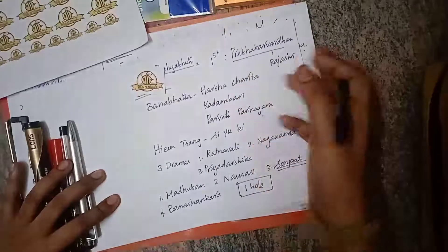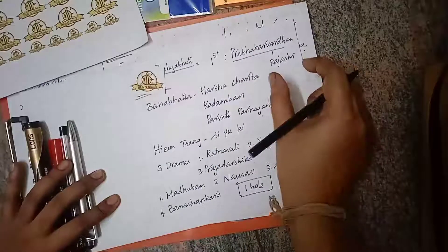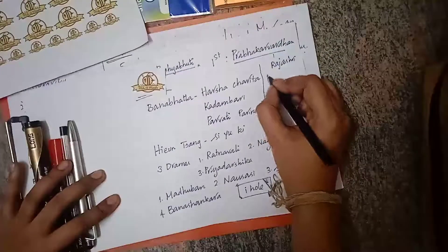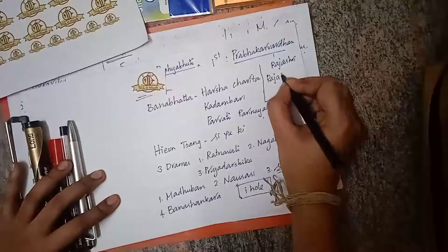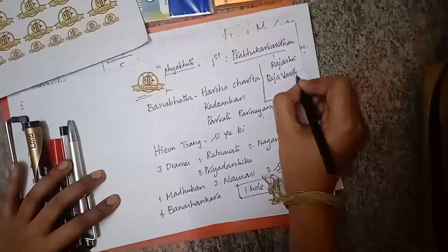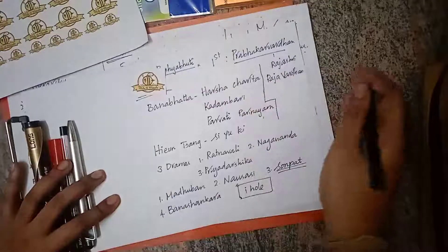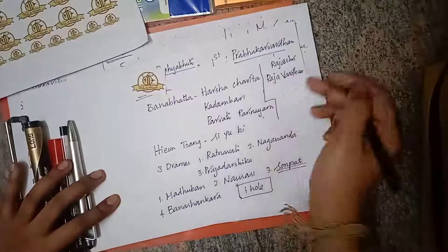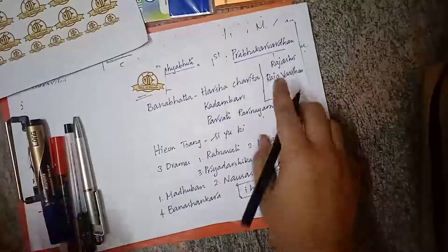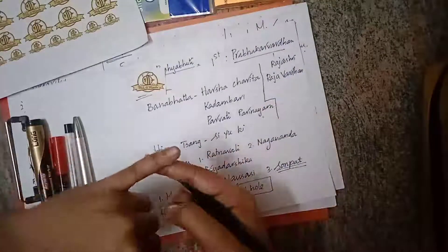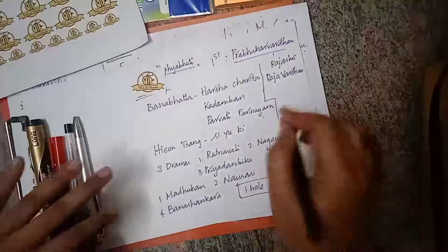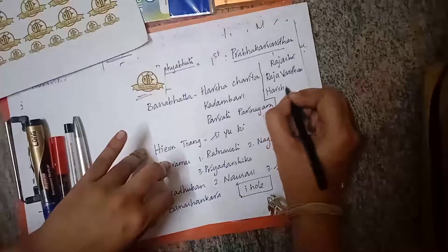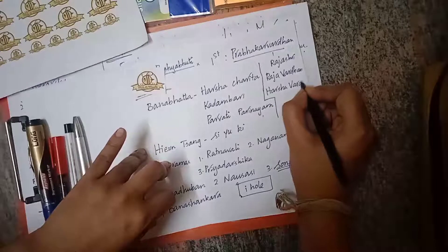Grihavarman was defeated by the Bengal ruler and the Malwa ruler, and Rajasri was captured. To rescue his sister, Rajavardhan went and defeated the Bengal ruler, but eventually he was killed by them. After his elder son's death, the younger son Harshavardhan was made king.